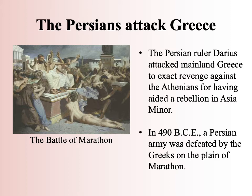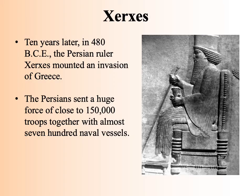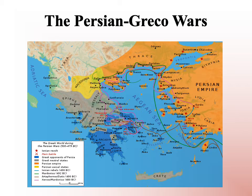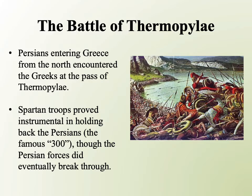The Persians decided they needed to mount a much more serious attack on Greece. This happened under the next Persian ruler, Xerxes, who mounted a massive invasion in 480 BCE — 10 years later. They sent a huge force of roughly 150,000 troops together with almost 700 naval vessels, making it a two-pronged attack by land and by sea, as illustrated by the map shown here. The Persian army marched north, came around the northern part of the Aegean Sea, and descended from mountainous terrain into Greece proper, while the Persian navy sailed more directly across the Aegean Sea.